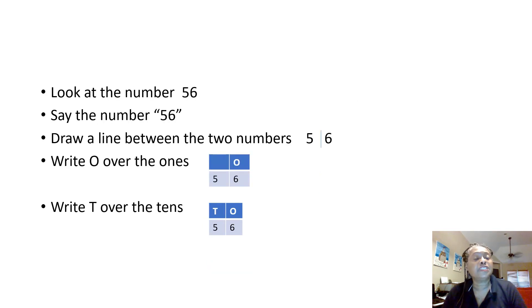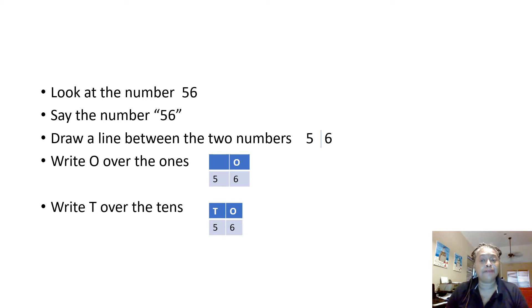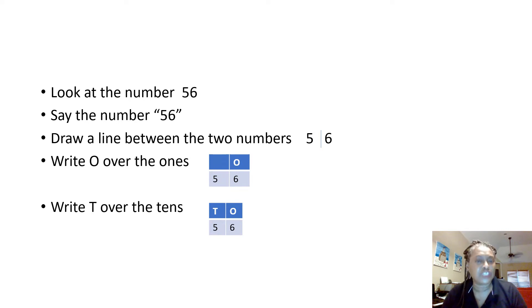Look at this number — say the number. That's right, fifty-six. We're going to draw a line between the five and the six, separating the tens from the ones. So we have six ones and five tens.